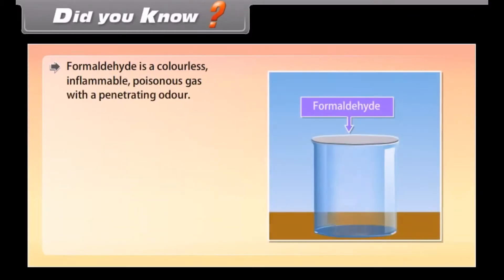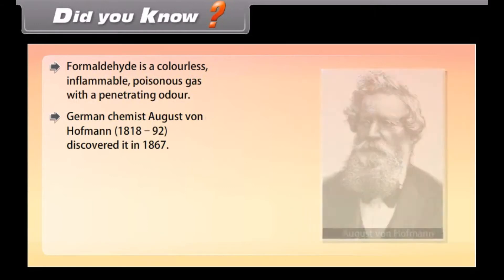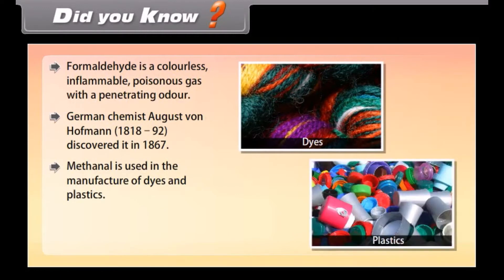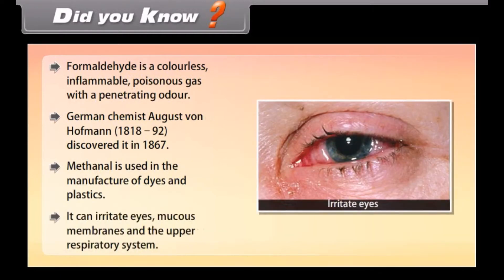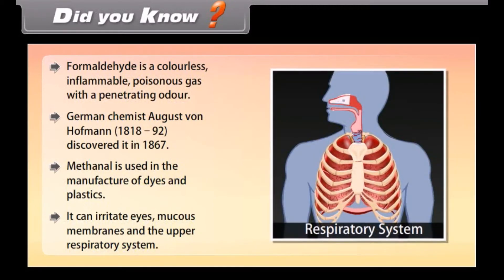Did you know? Formaldehyde is a colourless, inflammable, poisonous gas with a penetrating odour. German chemist August von Hofmann (1818–1892) discovered it in 1867. Methanal is used in the manufacture of dyes and plastics. It can irritate the eyes, mucous membranes, and the upper respiratory system.